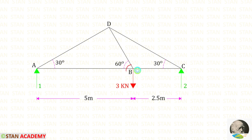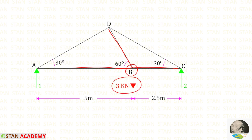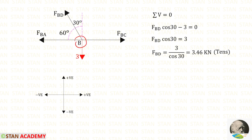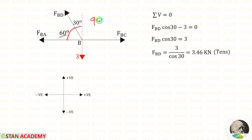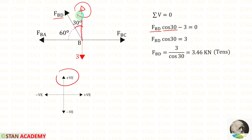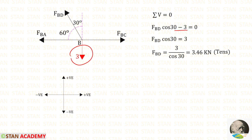Now let us take joint B. In joint B we have forces in BA, BC, and BD, and also a vertical load of 3 kilo Newton. We only need to find the member force FBED. Applying sigma V equals 0 — we know the angle is 60 degrees, so 90 minus 60 gives 30 degrees. We multiply FBED with cos 30. When made vertical it acts upwards, so it is positive. The load acts downwards, so it is negative. Finally FBED gives a positive value, meaning it is tensile.